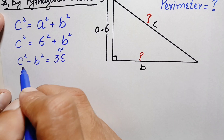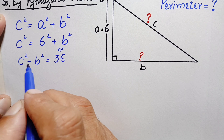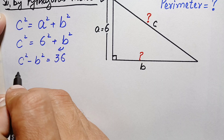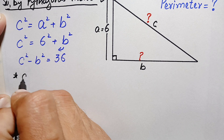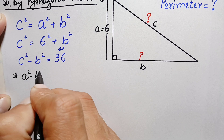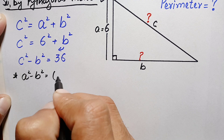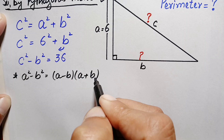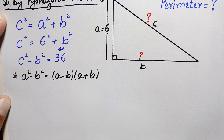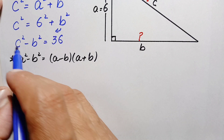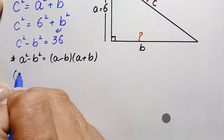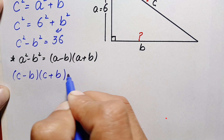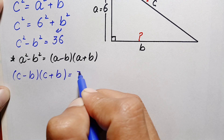Looking at the left hand side, we have c² − b², which matches the algebraic identity a² − b² = (a − b)(a + b). Using this identity, the left hand side becomes (c − b)(c + b) = 36.